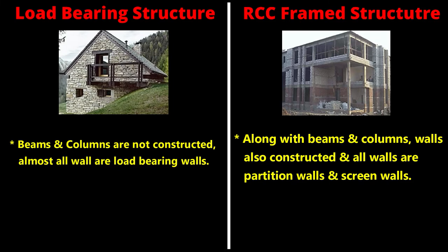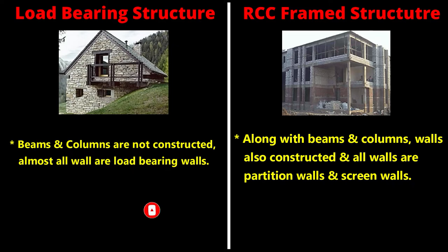In a load bearing structure, beams and columns are not constructed — only walls are constructed, and almost all walls are load bearing walls. In a framed structure, walls are also constructed after the beam-column frame is built. All the constructed walls are partition walls or screen walls; none of them is a load bearing wall.